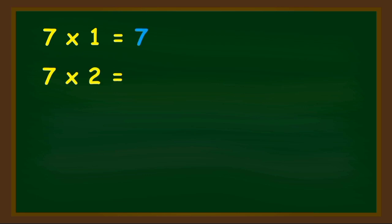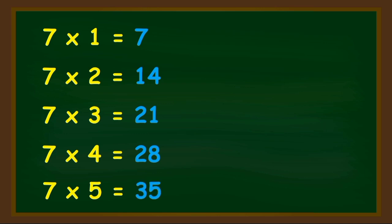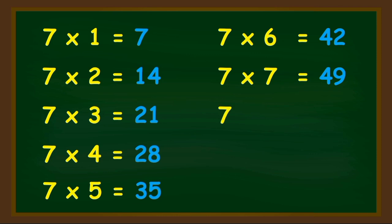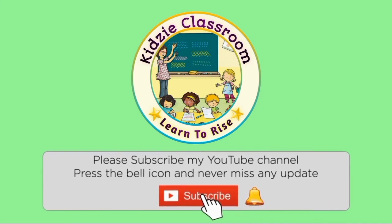Seven ones are seven. Seven twos are fourteen. Seven threes are twenty-one. Seven fours are twenty-eight. Seven fives are thirty-five. Seven sixes are forty-two. Seven sevens are forty-nine. Seven eights are fifty-six. Seven nines are sixty-three. And seven tens are seventy.